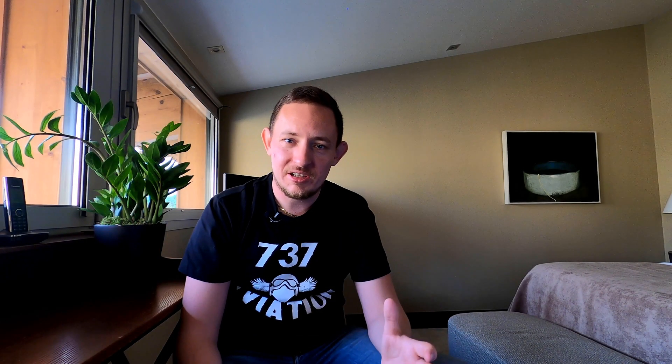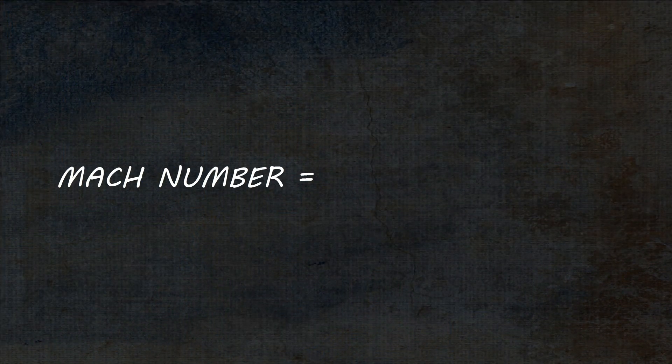The other thing limiting us is high speed buffet. To understand that, we have to understand what Mach number is. Mach number is actually the speed of an object compared to the speed of sound in the medium we're flying through — in other words, the speed of the airplane compared to the local speed of sound.